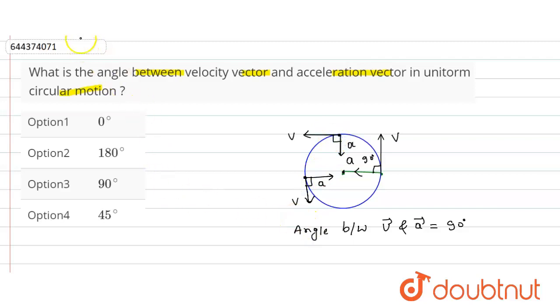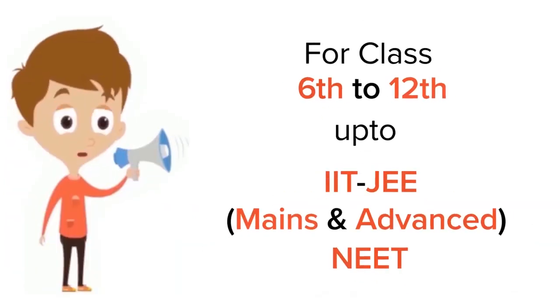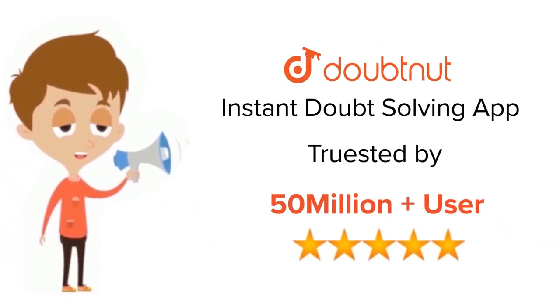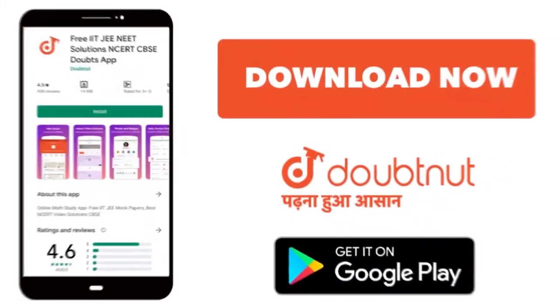So see, our option third is the correct option. Thank you. For class 6 to 12, IIT-JEE and NEET level, trusted by more than 5 crore students. Download Doubtnet app today.